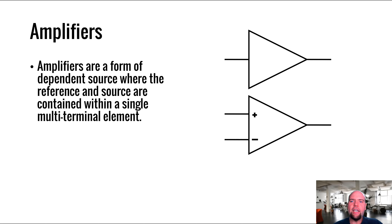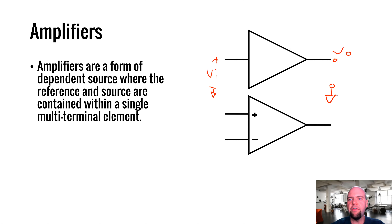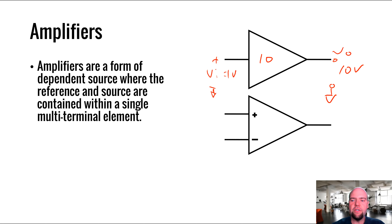With this amplifier design, typically you have some input Vn relative to some unshown reference, and some output Vout relative to some unseen reference. An amplifier just amplifies the input voltage. So if this were a gain of 10 amplifier and the input voltage was 1 volt, your output would be 10 volts. Fairly straightforward - that's a basic amplifier design.